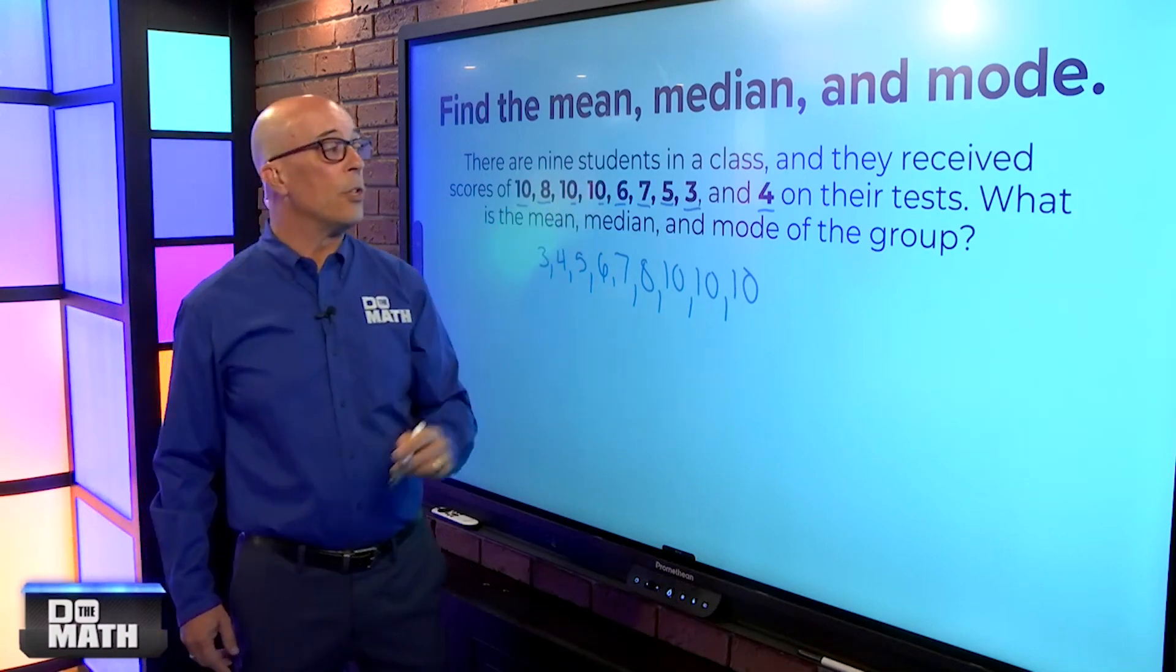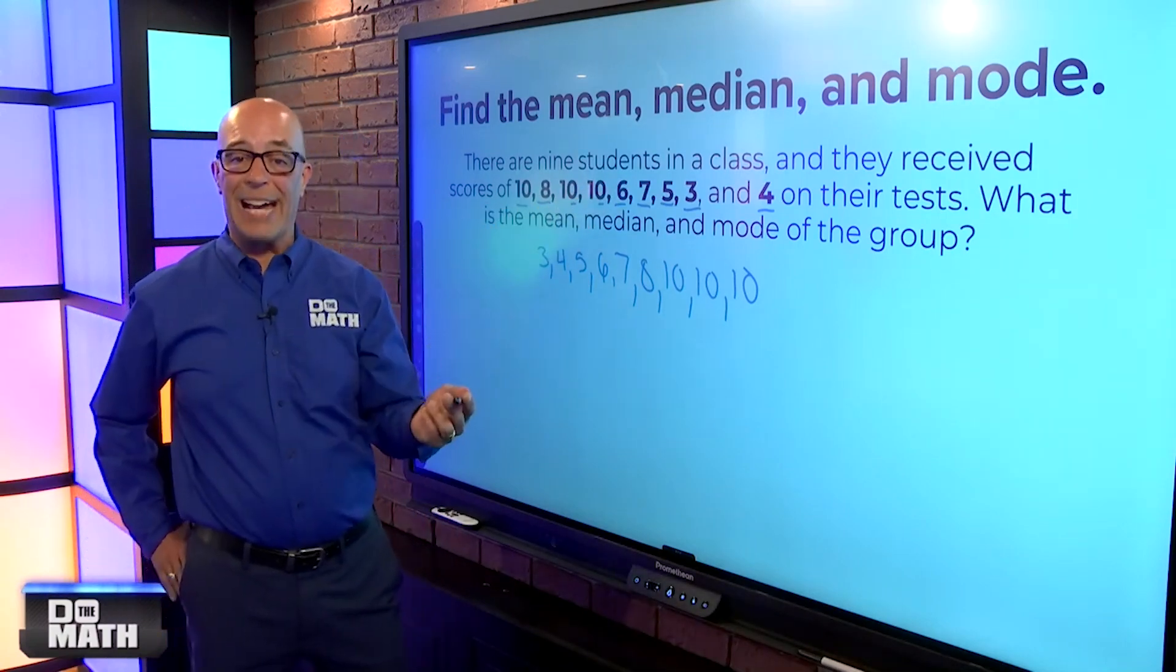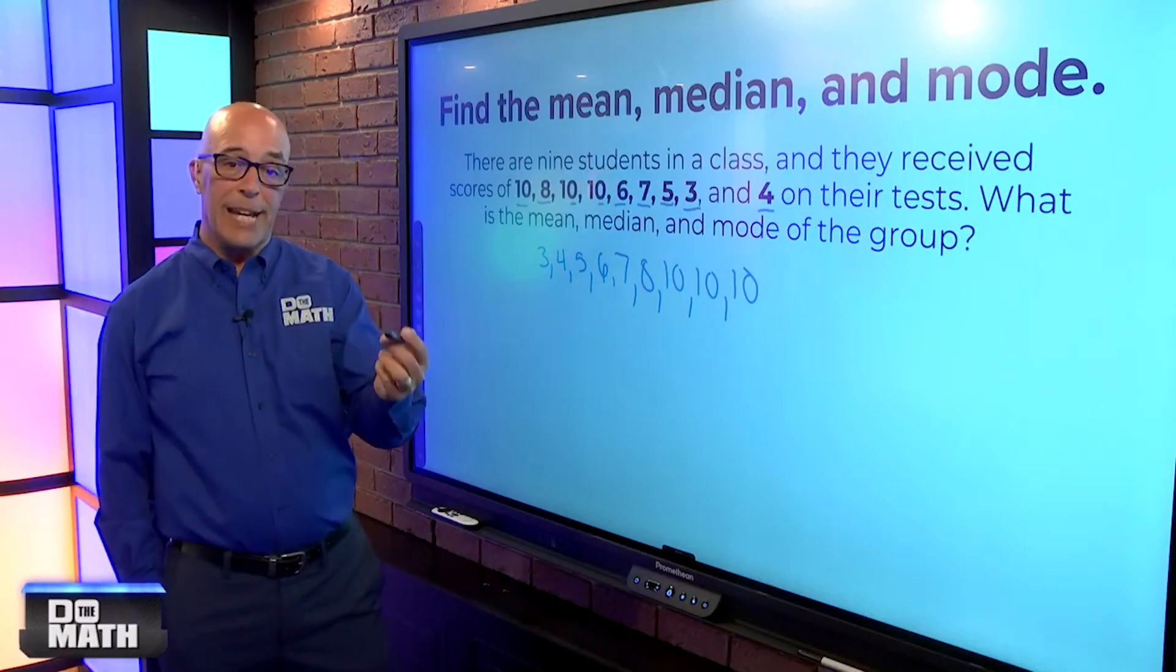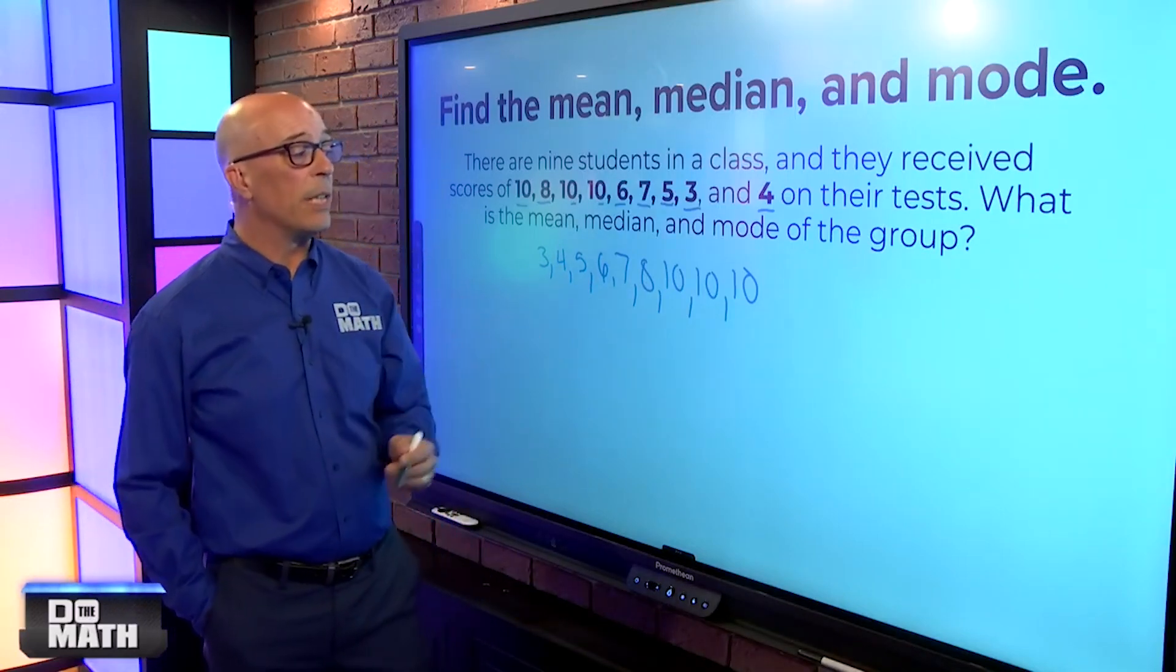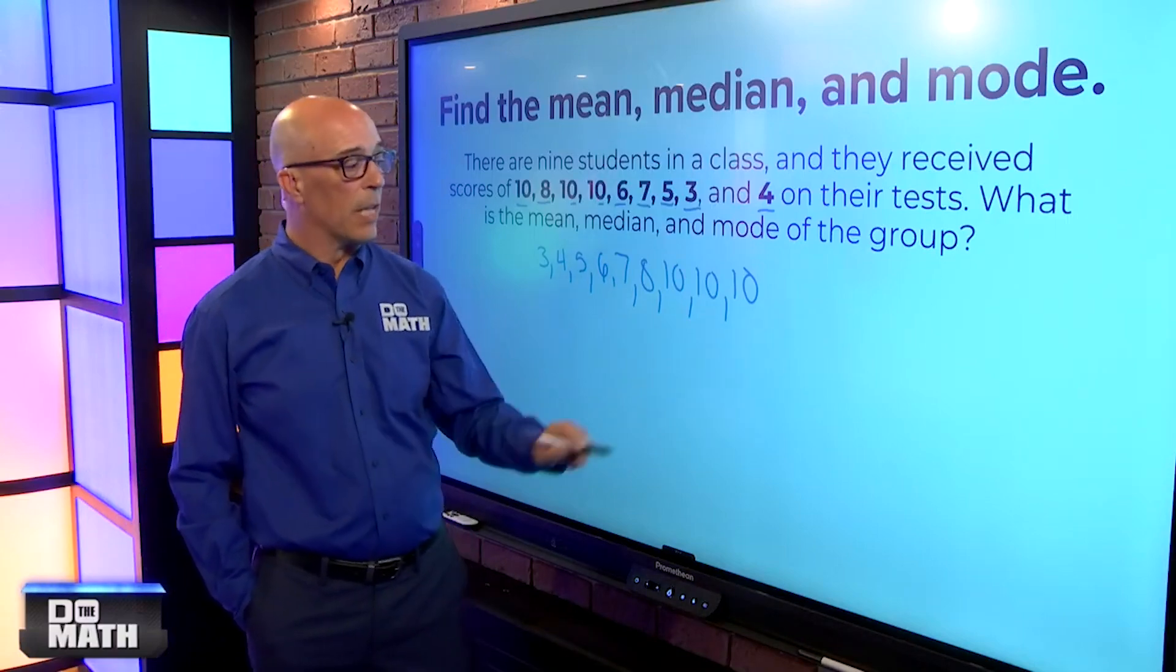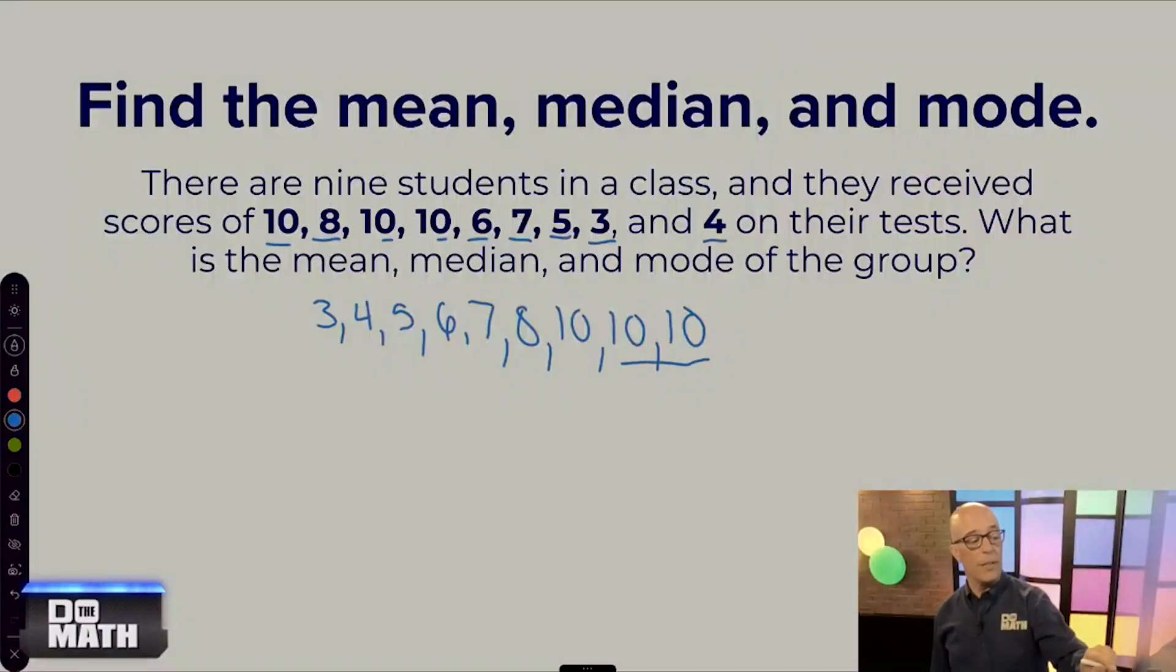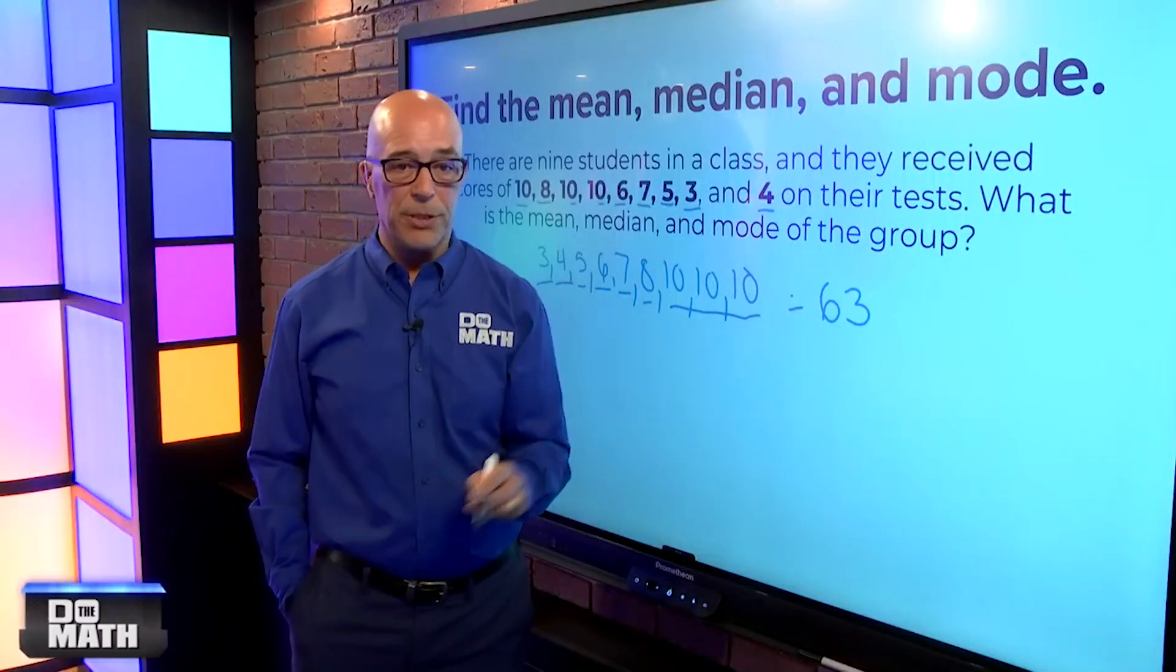So, the first thing we can do is the mean, which, once again, is the average. So, if you have a calculator, by all means, use that. It's simply a tool to make things easier. But, I think we can go ahead and work this in our head. So, we've got 10, 20, 30. Here, we can make another 10. That's 40, 50, and then 13 makes 63. So, we know that the whole thing adds up to 63.